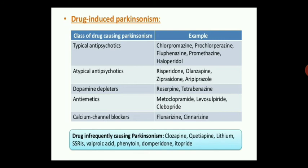There are certain antiemetic drugs — agents used to treat vomiting — like metoclopramide, levosulpride, and clebopride, which can lead to parkinsonism. There are also certain calcium channel blockers like flunarizine and cinnarizine. Drugs that infrequently cause parkinsonism include clozapine, quetiapine, lithium, selective serotonin reuptake inhibitors, valproic acid, phenytoin, domperidone, and etopride.